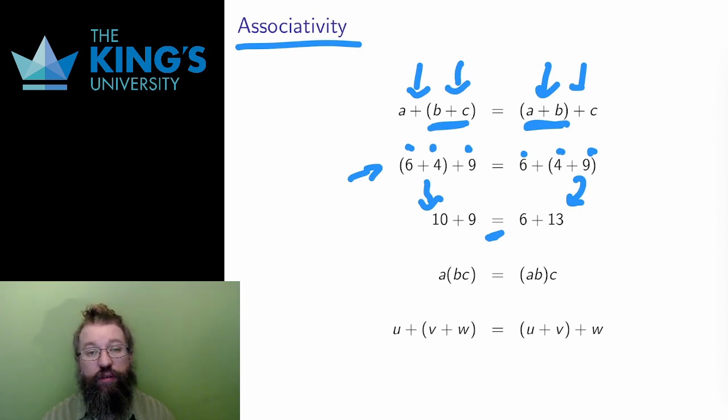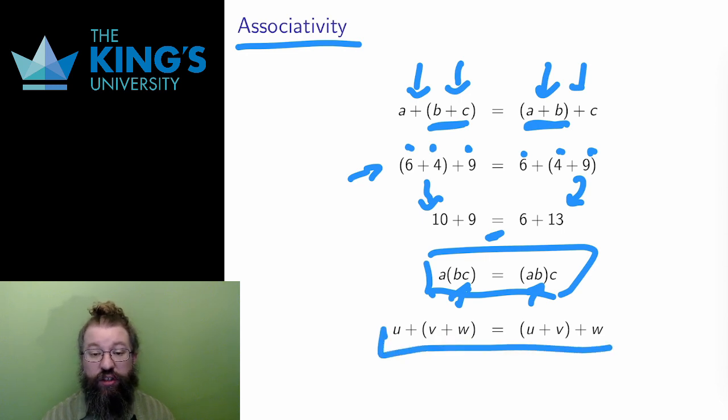Similarly, multiplication of numbers is associative. If I multiply three numbers a, b, and c, I can do the first two first and then multiply by the third, or the last two first and then multiply by the first, and the result is the same. So, are vector operations associative? If I have three vectors, u, v, and w in Rn, then can I bracket their addition in either way? I can. The proof is almost identical to the proof for commutativity, so I won't repeat it here.